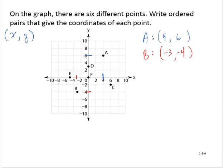Point C has an x-coordinate of 6 and a y-coordinate of -2.